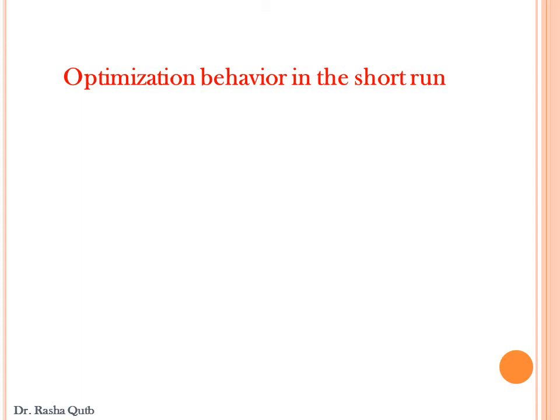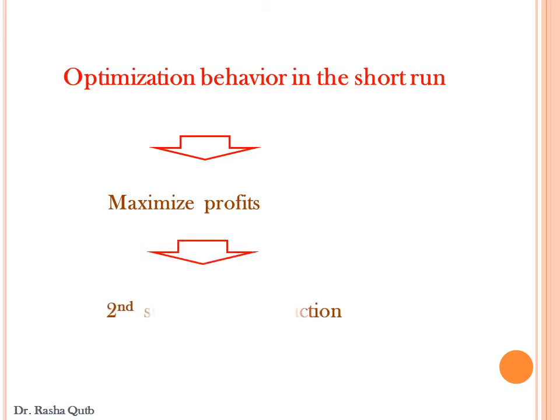The aim of any producer is to maximize his profit. In the short run, we have only one variable factor of production which is labor. Here, output is governed by the law of diminishing return. Hence, optimization behavior in the short run is referred to the second stage of production process.